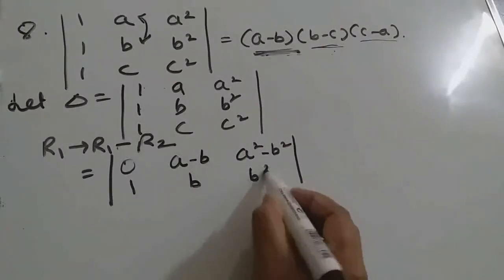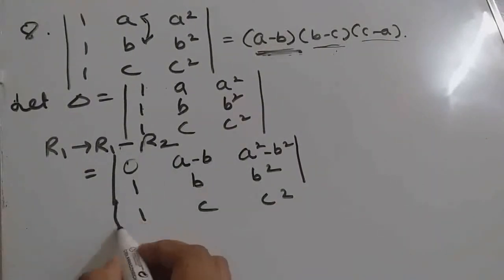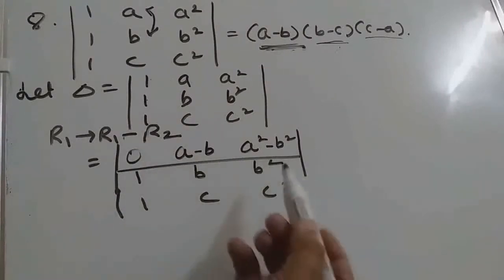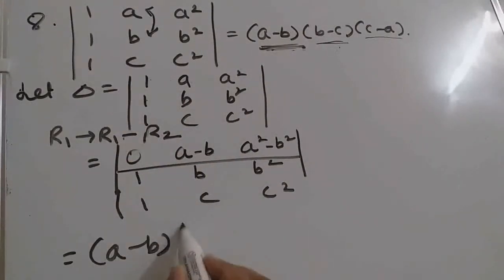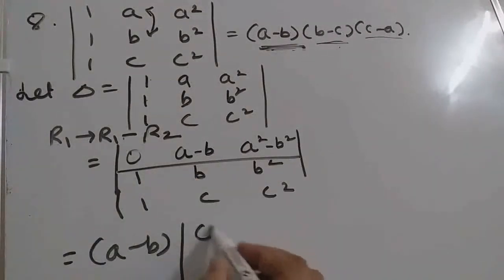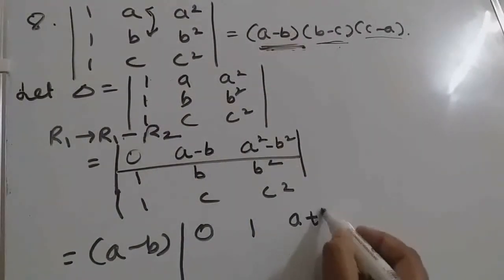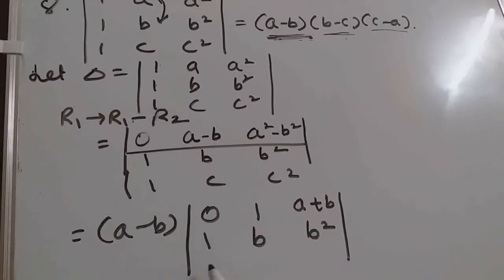The second row has 1, B, B squared, and the third row 1, C, C squared will remain the same. Now out of R1 you can take the bracket A minus B common, so you will be left with 0, 1, and here using the identity A plus B will remain. Then 1, B, B squared and 1, C, C squared.